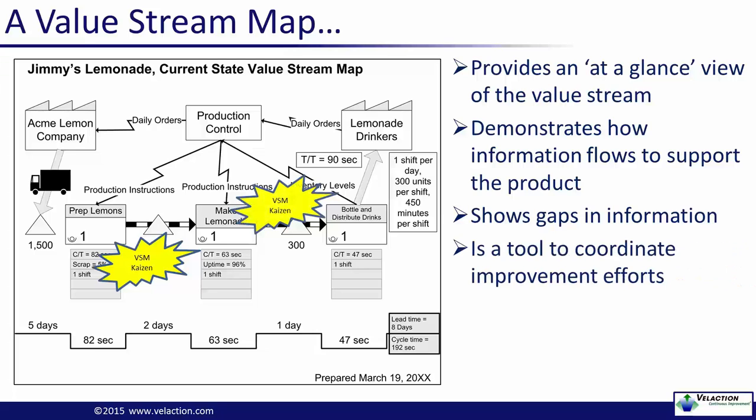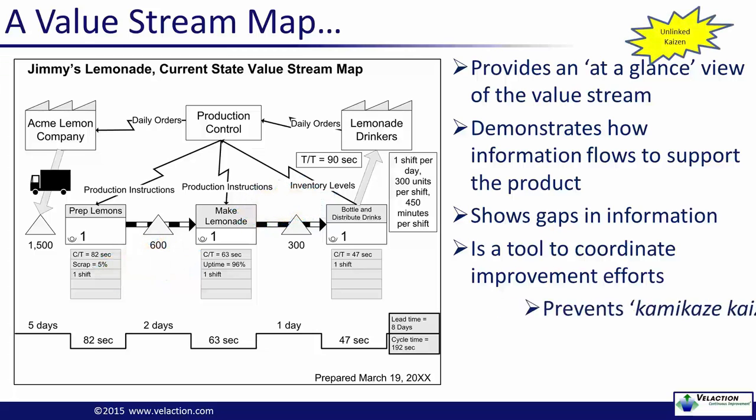Another big thing that this current state value stream map does is provide you with a backdrop upon which you can overlay your continuous improvement efforts. Seeing improvement opportunities visually on a VSM prevents you from taking a haphazard approach to Kaizen. Without the value stream map, it is easy to fall into the mode of a dog chasing a squirrel — very easy to get distracted and pulled away from what is important. This lack of coordinated effort is often called kamikaze Kaizen. While these unlinked projects can provide gains, these improvements are generally local in nature and do little to improve the flow of the entire system.